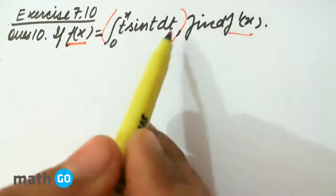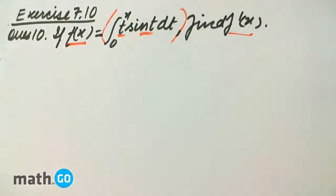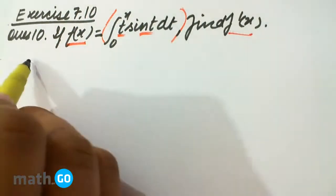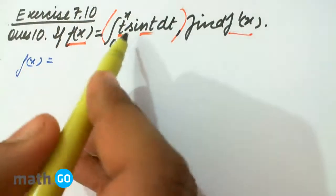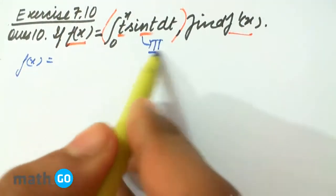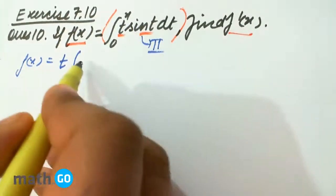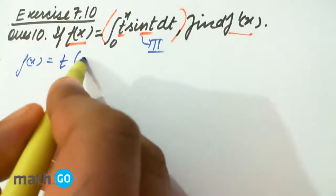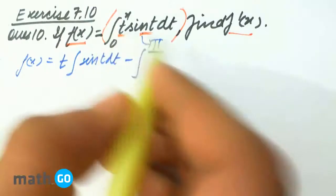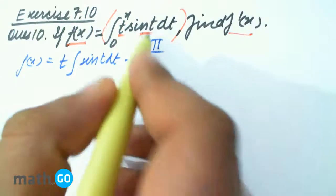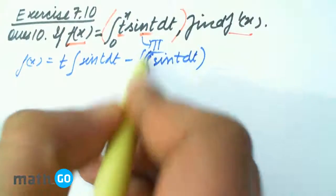We will integrate this expression. It is of the form u by v, so simply applying the by-parts formula, we will get f(x) equals to... This kind of integration obviously, this has to be taken as the second function. So t integration of sin t dt minus...